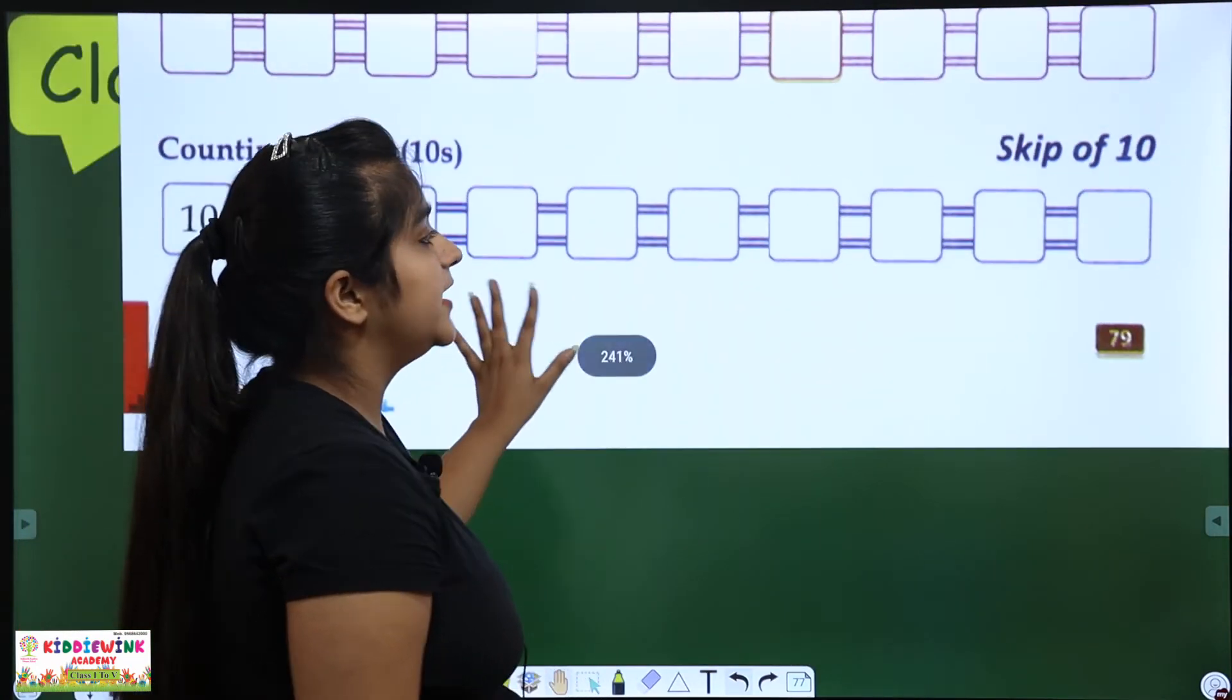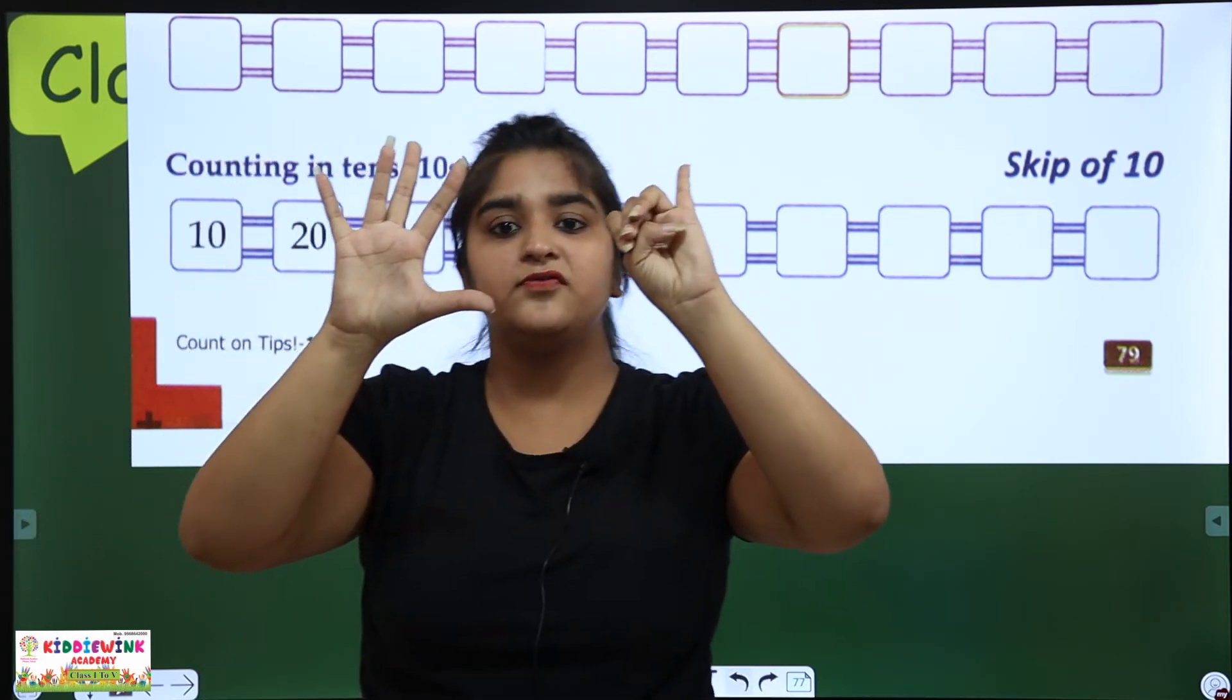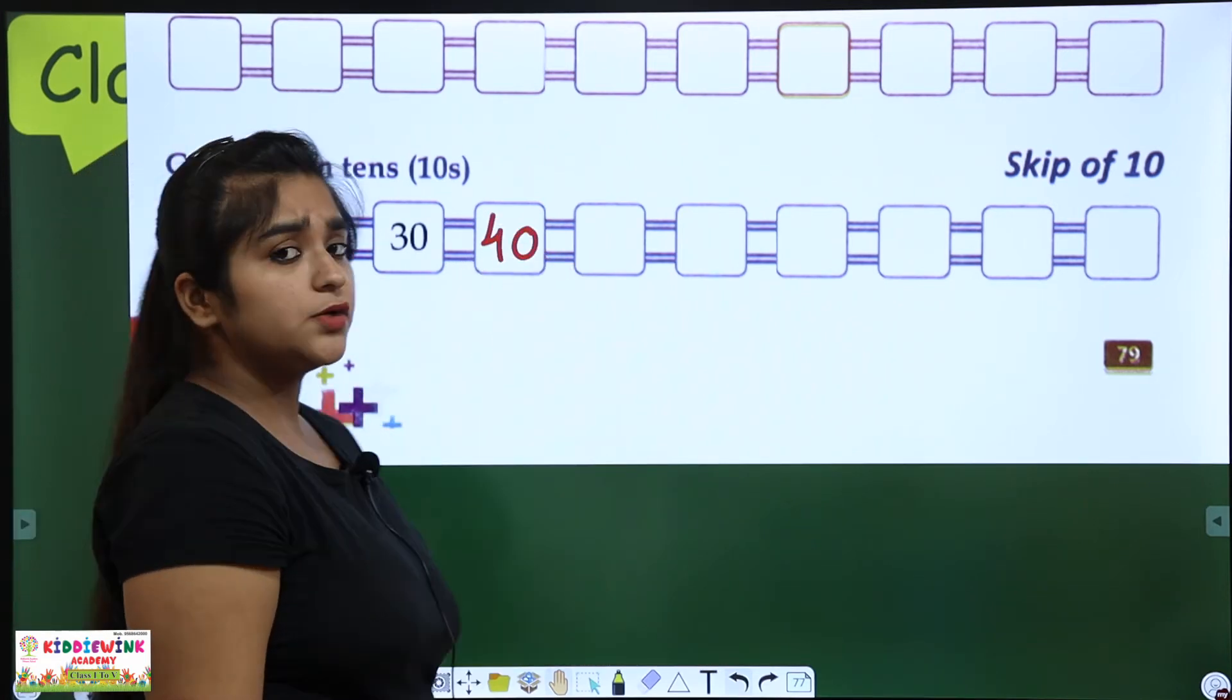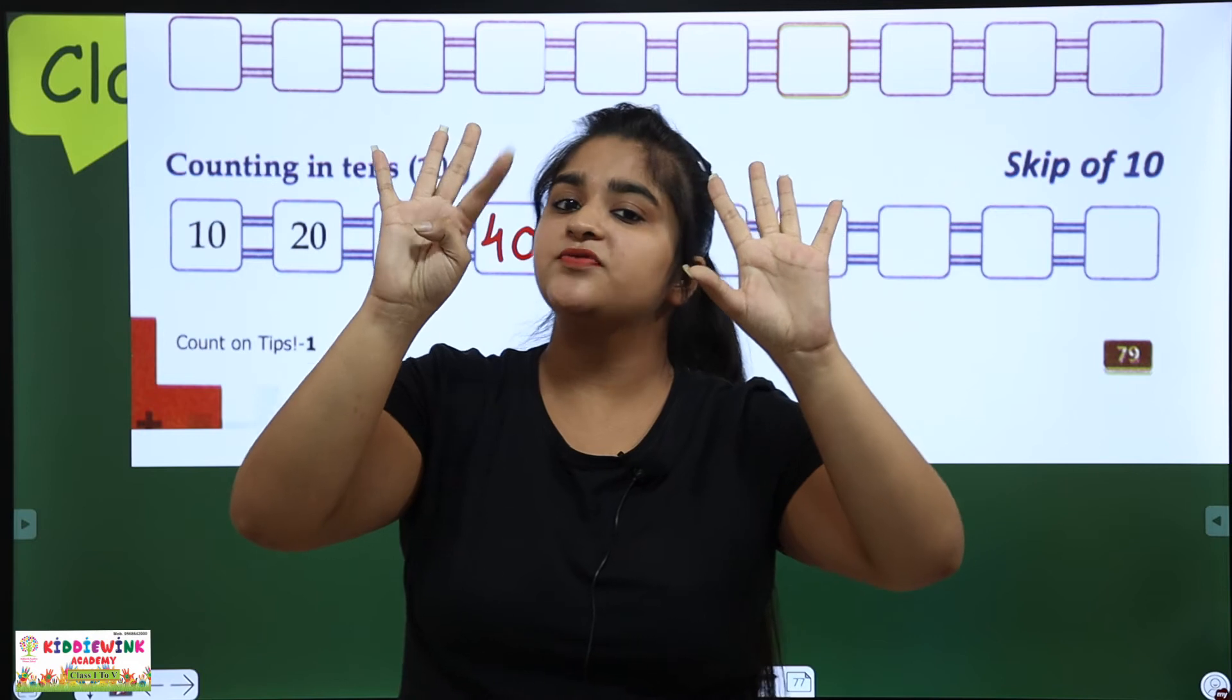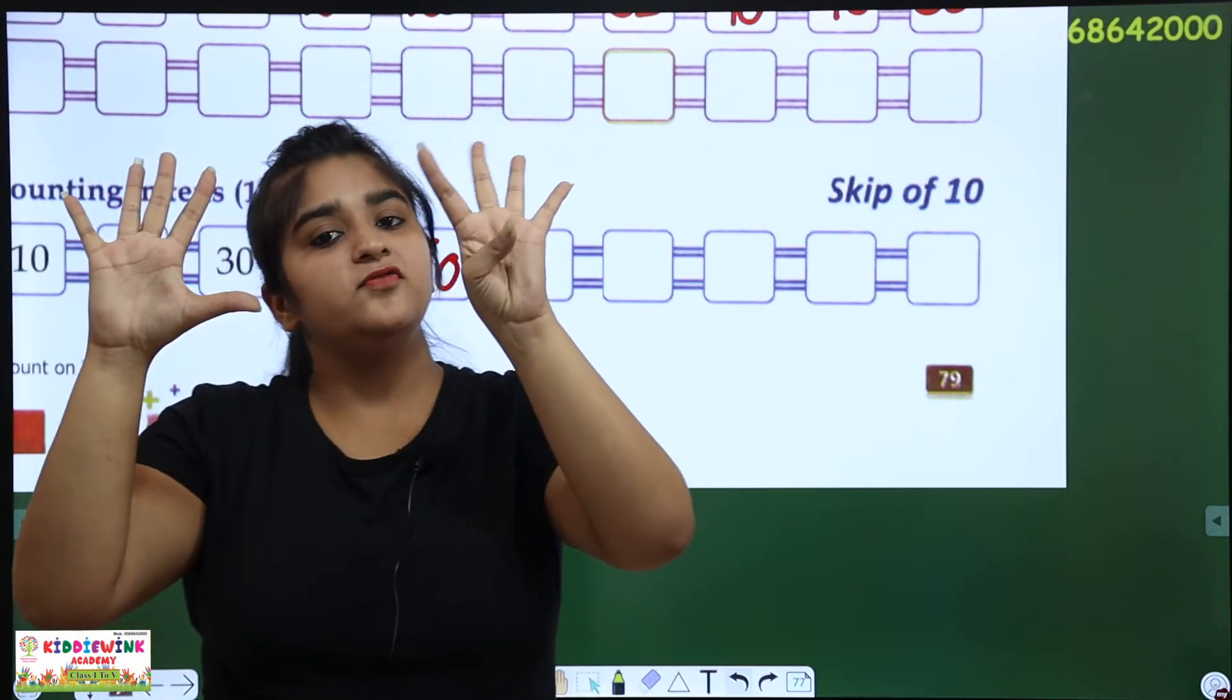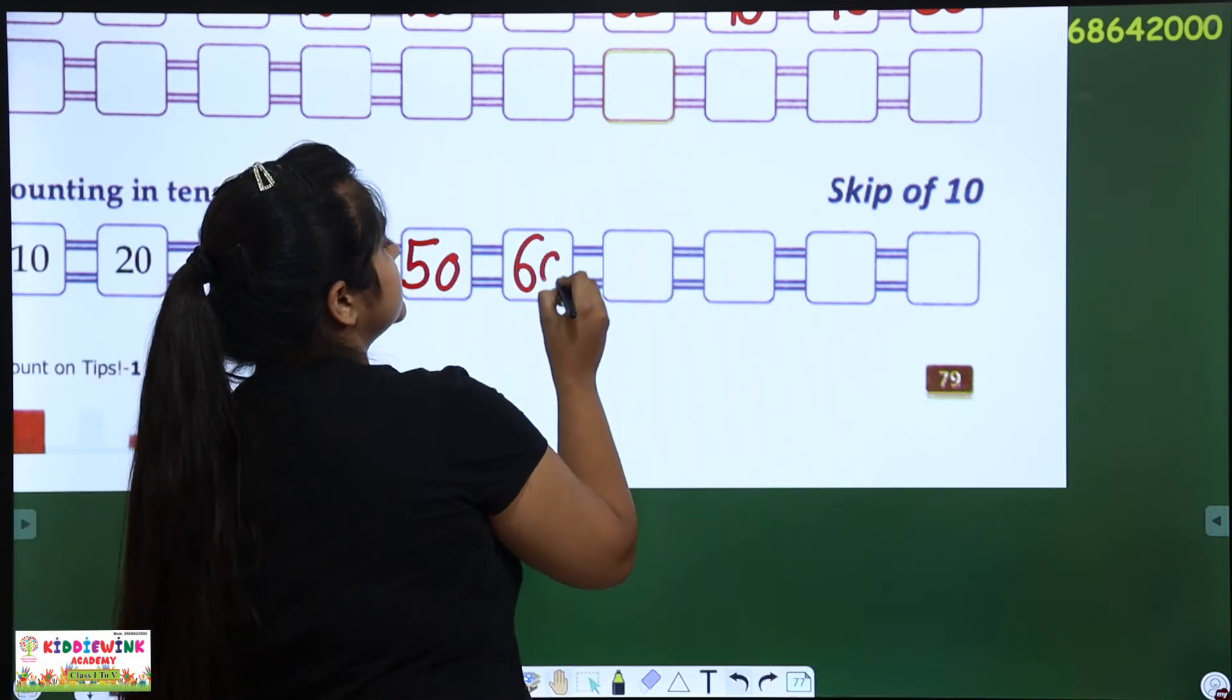Now we have to skip by 10. How can you open 10 fingers? 10, 20, 30, 30. After 30, 31, 32, 33, 34, 35, 36, 37, 38, 39, 40. Here, what's next? 40, 40. 40, 41, 42, 43, 44, 45, 46, 47, 48, 49, 50. Here, what's next? 50, 50, 50. 50, 51, 52, 53, 54, 55, 56, 57, 58, 59, 60. Here, our answer is 60, 60.